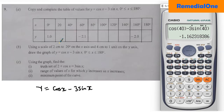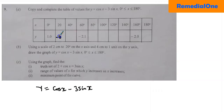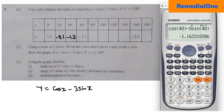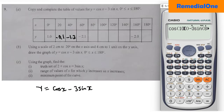So we record: x = 20 gives negative 0.1, and x = 40 gives negative 1.2. Now change to x = 80. Enter cos 80 minus 3 sin 80, and that gives negative 2.8.